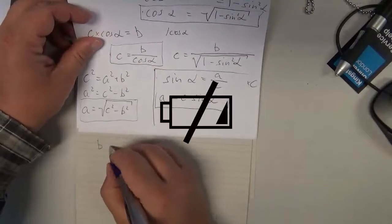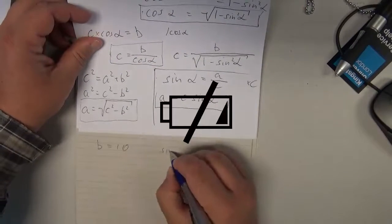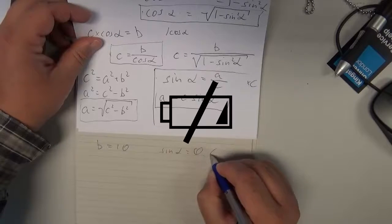So, we have now b equals 10 and sin alpha equals 0.6.